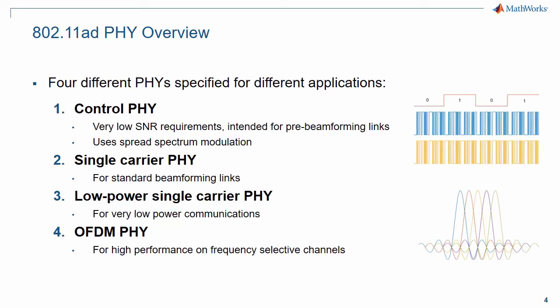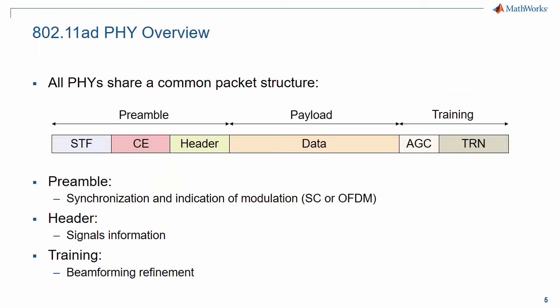802.11AD defines four different physical layers. The control PHY is used to set up links before beamforming has been established, therefore it is designed to operate in very low SNRs. The single carrier PHY is used for general beamforming links. The low power PHY trades off coding gain for low power consumption. And the OFDM PHY is designed for high throughput links in very frequency selective channels. All four PHY formats share a common packet structure. The preamble is used for synchronization. The header contains information required to decode the payload. And optional AGC and training fields are appended to the packet for refining beamforming weights.